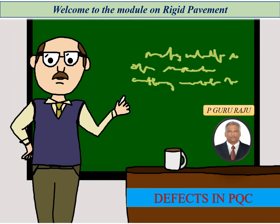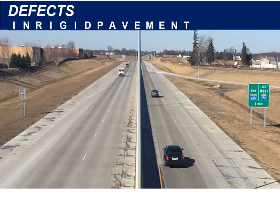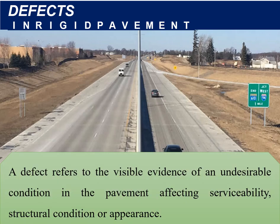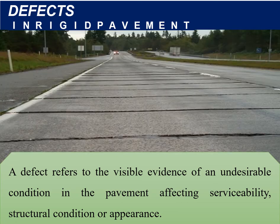Welcome to the module on rigid pavements. Today we will be covering defects in the PQC, Part 2. We will cover the different types of cracks generally seen while doing the PQC. To recap, a defect refers to the visible evidence of an undesirable condition in the pavement affecting the serviceability, structural condition, or appearance.